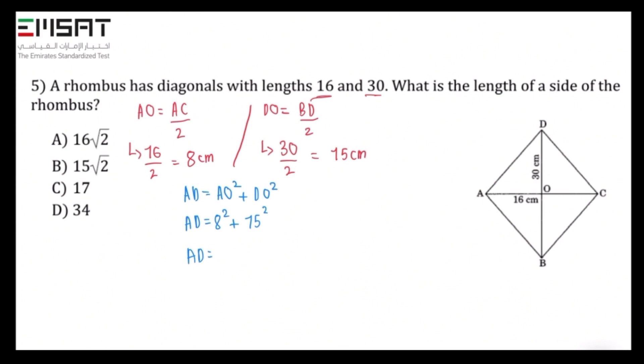So it will be 64 plus 15 squared which is 225. Then add 64 plus 225, it will be 289. Then we will find the square root of 289. So AD equals square root of 289, which is equal to 17 cm.